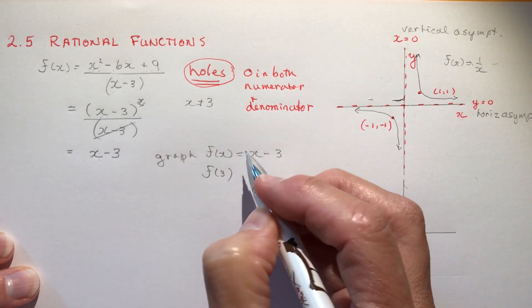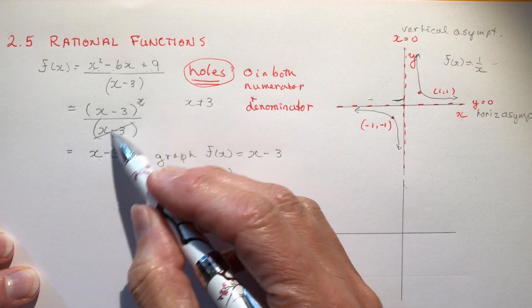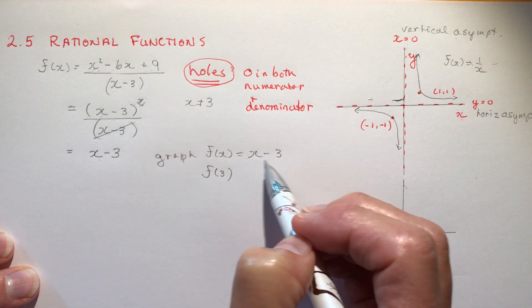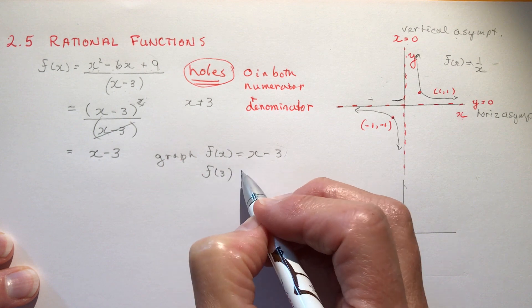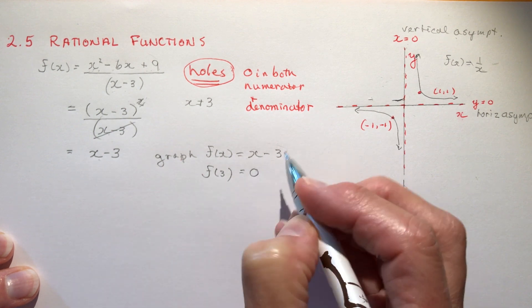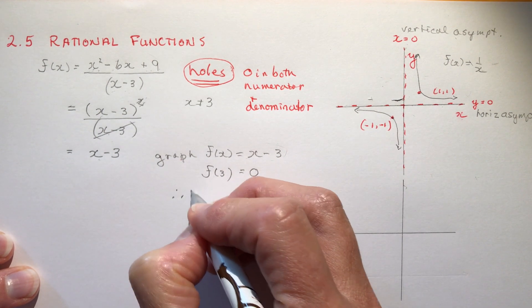And where you have x is equal to 3, so if I plugged in 3 here now and I said well what's f(3) going to be, because I know it's a restriction for the denominator but we've cancelled it out with this other one so now this is what I'm going to graph.